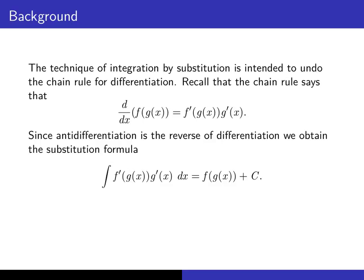Since anti-differentiation is the reverse of differentiation, we obtain the integral formula: integral of f prime of g of x times g prime of x dx is f of g of x plus c. This is our substitution formula, and c here is an arbitrary constant that gives us all of the anti-derivatives of the integrand.